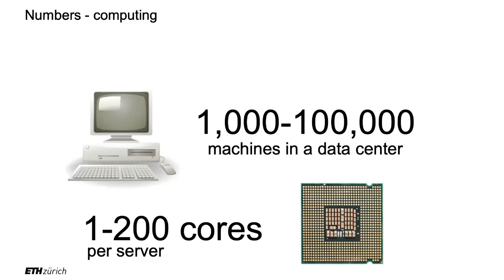On one machine — also called a node — you have between 1 and 200 cores per server. They are exposed to users as virtual machines simulating machines, which is why you might hear 'virtual cores.' The number of virtual cores is double the physical cores due to hyper-threading, which allows you to double what you get out of a core. Typically you see powers of two: 64, 128, and so on. These numbers are growing every year, even if the number of machines is physically limited.